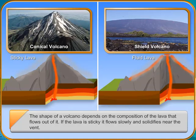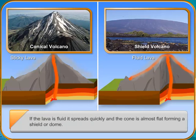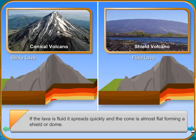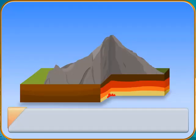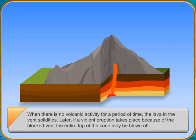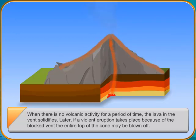When there is no volcanic activity for a period of time, the lava in the vent solidifies. Later, if a violent eruption takes place because of the blocked vent, the entire top of the cone may be blown off. This forms an enlarged crater or caldera. The caldera may get filled with water, forming a crater lake.